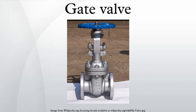Gate valves may have flanged ends which are drilled according to pipeline-compatible flange dimensional standards. Gate valves are typically constructed from cast iron, ductile iron, cast carbon steel, gun metal, stainless steel, alloy steels, and forged steels. All metal gate valves are typically used in ultra-high vacuum chambers to isolate regions of the chamber.